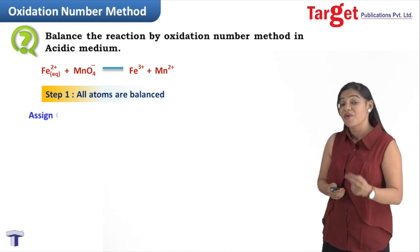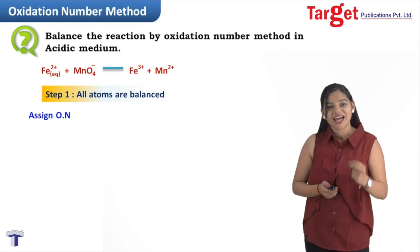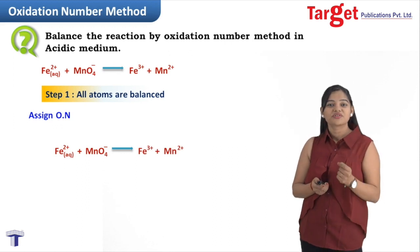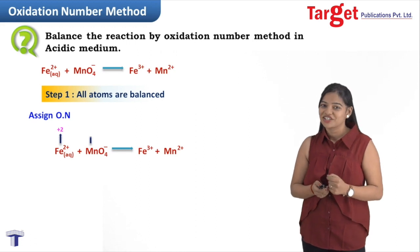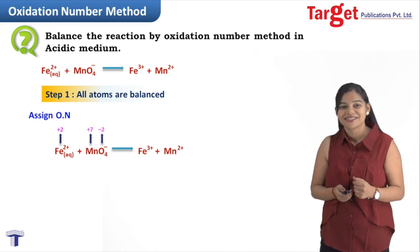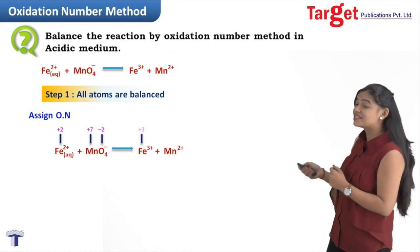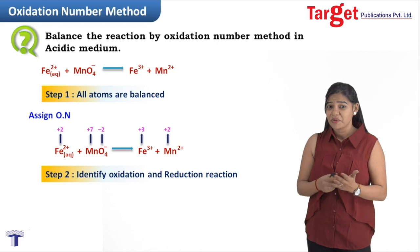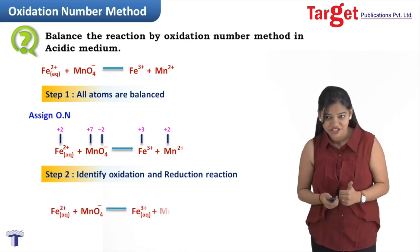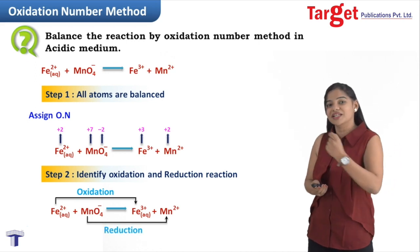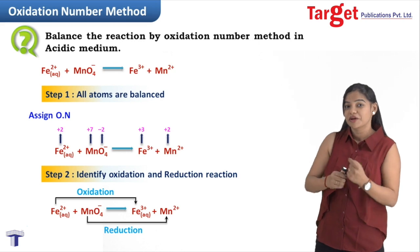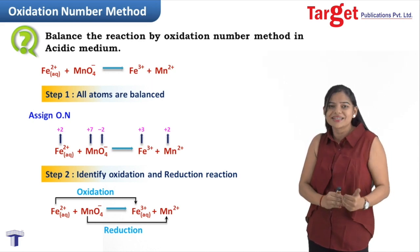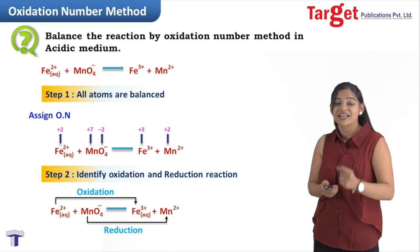Our second step is to assign oxidation numbers to identify the oxidation and reduction reactions. Fe on the reactant side is divalent, so its oxidation number is +2. Mn is calculated as +7. On the product side, Fe is +3 and Mn is given as +2. Since Fe goes from +2 to +3, the number is increasing — that is oxidation. Since Mn goes from +7 to +2, the number is decreasing — that is reduction.